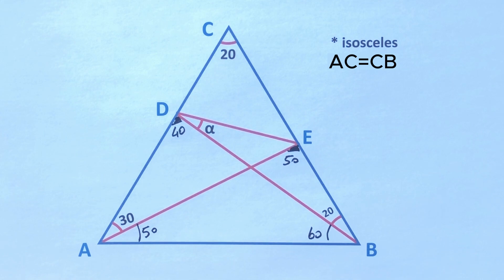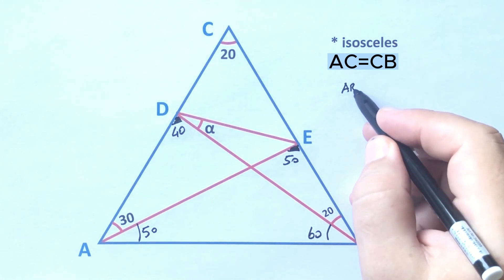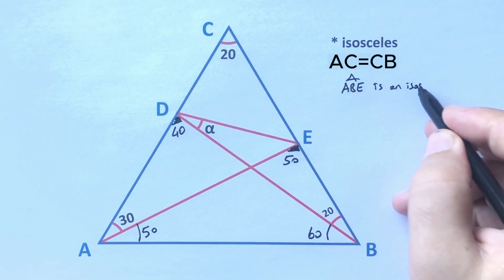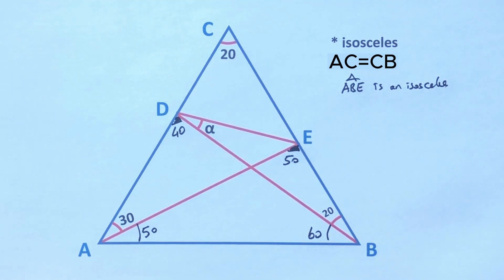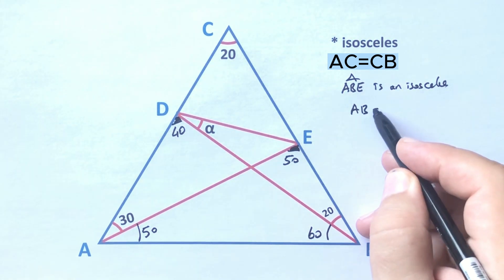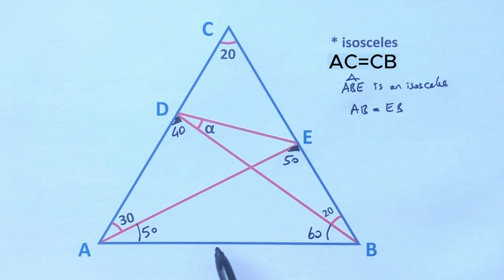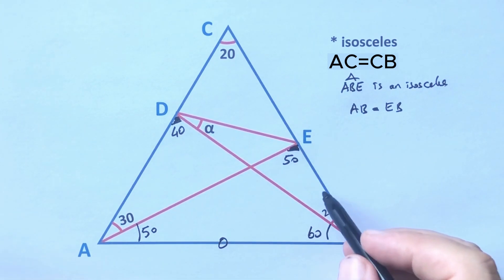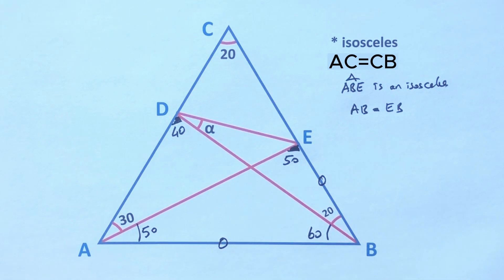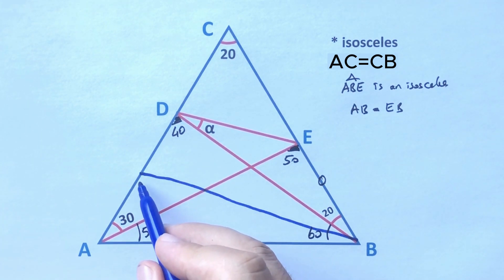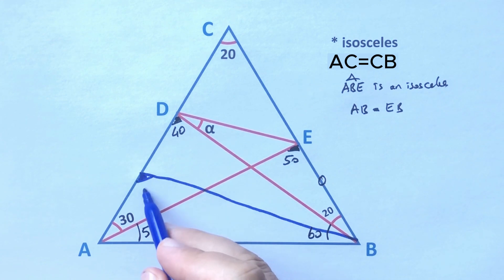Notice that triangle ABE is an isosceles triangle. The length of AB must be equal to the length of EB. That means these two sides are equal, and then if we create an isosceles triangle with a side equal to AB, here must be 80 degrees.